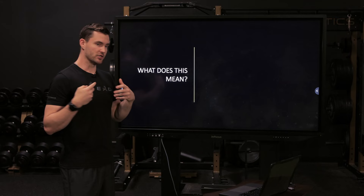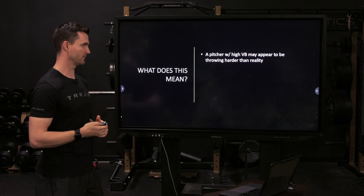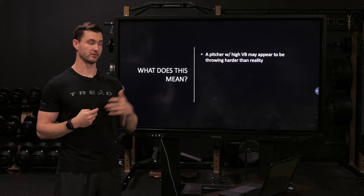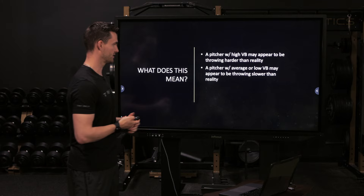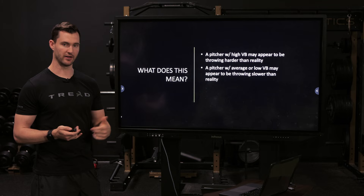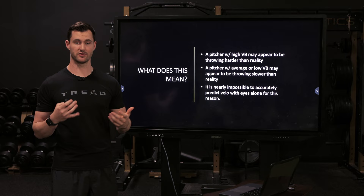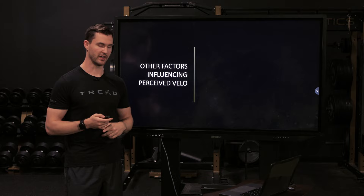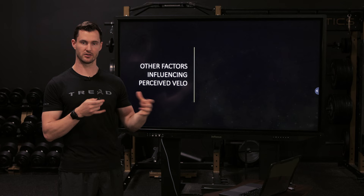From an IDAR and velocity assumption standpoint, the main thing is that a pitcher with super high induced vertical break may appear to be throwing harder than reality — 92 with a ton of carry might actually look harder than 98 with some sink. A pitcher with average or low vertical break may appear to be throwing slower than reality. It's really impossible, at least from what I've seen, to accurately predict velocity with your eyes alone, especially without knowing the actual pitch metrics associated with the vertical break.